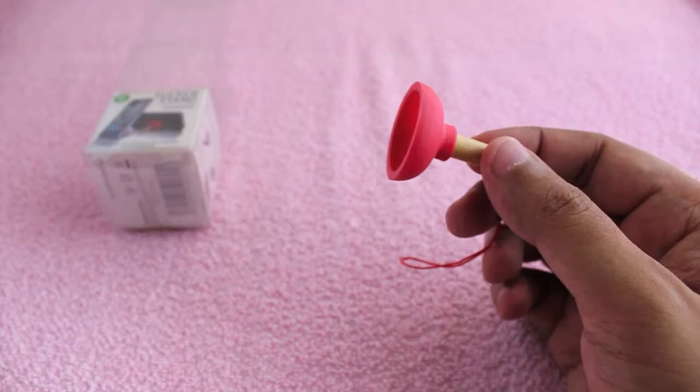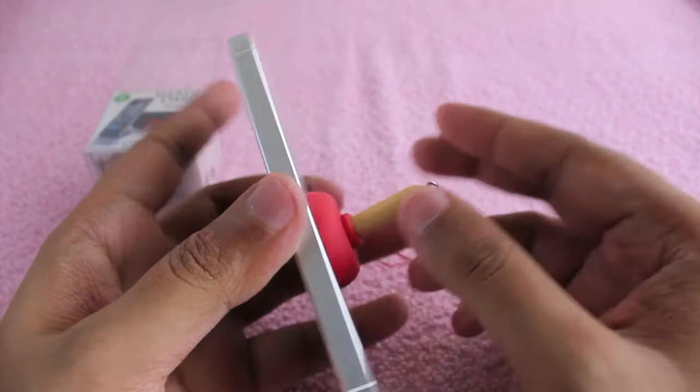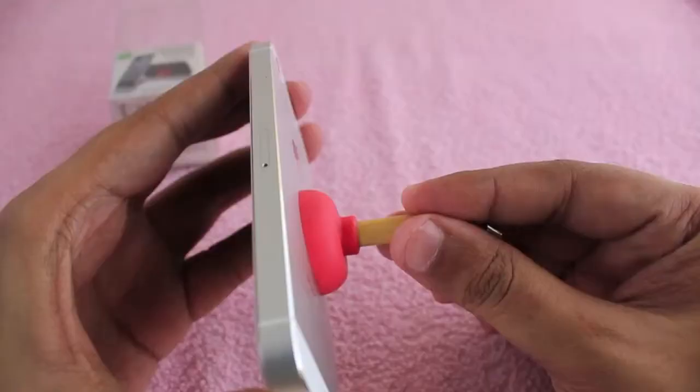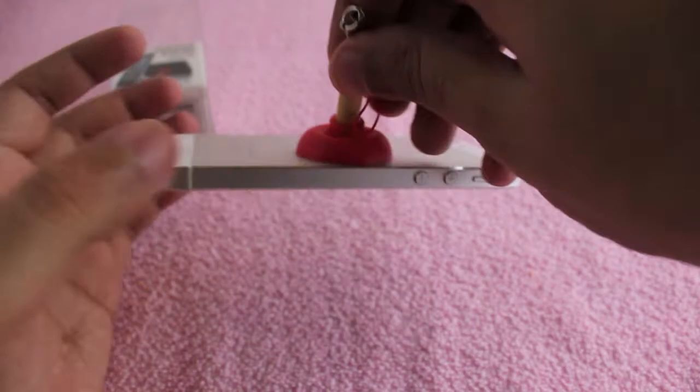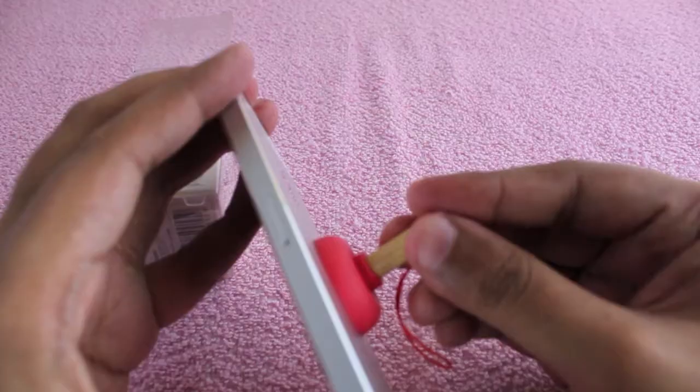When you need a stand, you just push it onto your phone and angle it any way you want. As you can see, it sticks quite well. Once you put it on, you just place it on your table.